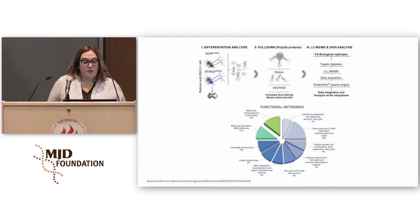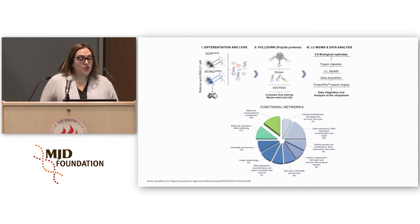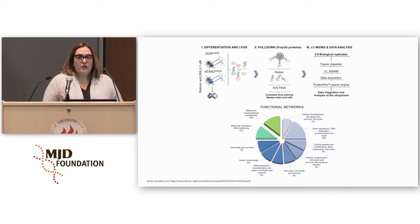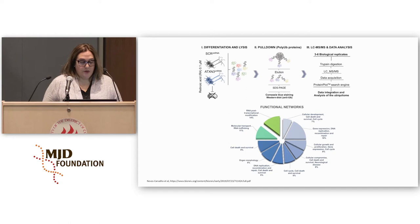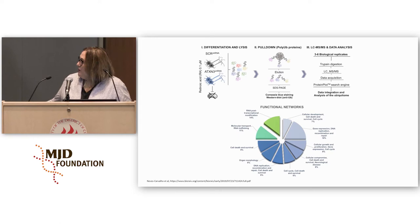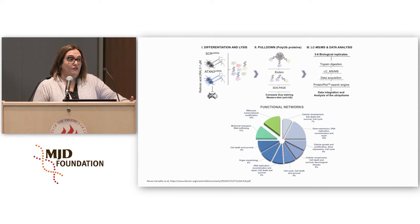In order to find substrates of Ataxin-3, we took an unbiased approach and used proteomics. We used a cell model of neuronal-like cells that we are able to differentiate in vitro to behave like neurons. We silenced Ataxin-3, and then using those cells, we looked at what changed in the global pattern of ubiquitinated proteins. We saw several proteins that were changed in terms of their ubiquitination levels.